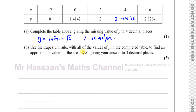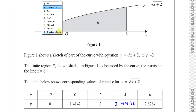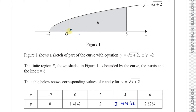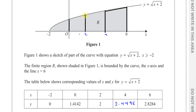Part B says: use the trapezium rule with all the values of y in the completed table to find an approximate value for the area of R, giving your answer to three decimal places. The area runs from x equals negative two to x equals six. The x-values chosen are spaced two units apart — at negative two, zero, two, four, six — splitting the region into equally spaced trapeziums.